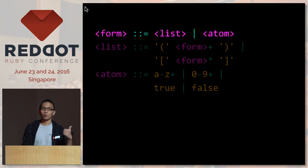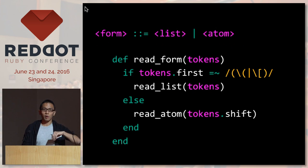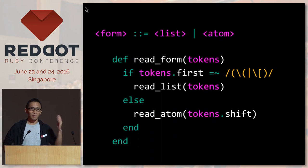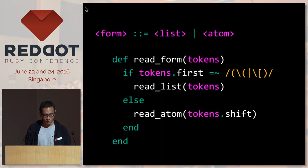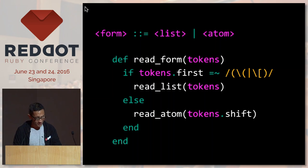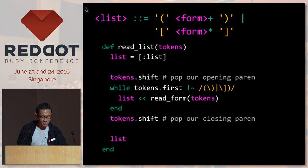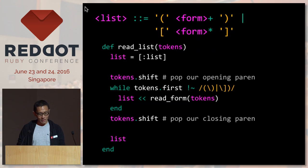For our first rule we'll have a function called read_form. I'll take the first token and check whether it's an open parenthesis — if it is, I'll call read_list on it; if not, I'll call read_atom. Simple as that — just five lines. For the second rule, since it's a bunch of tokens enclosed in parentheses, I'll put it in a loop and call read_form on it.